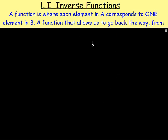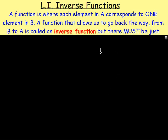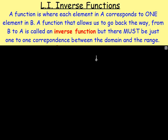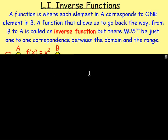A function that allows us to go back the way from B to A is an inverse function, but there must be just one-to-one correspondence between the domain and the range. So every single value in A must link to just one value in B, and every single value in B must link to one in A.